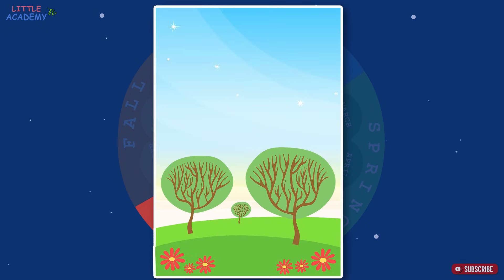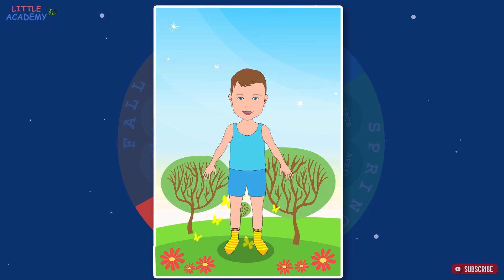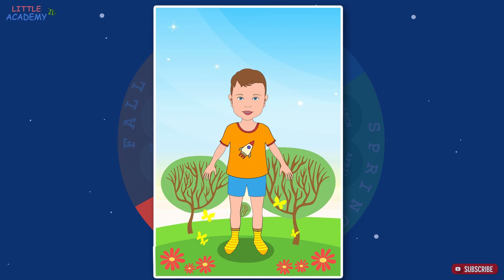It's hot in the summer. The trees are covered with leaves, grass grows, flowers bloom, and there are many insects such as bees, bumblebees, and butterflies. We don't need warm clothes in the summer, so we put on a t-shirt, shorts, and sandals.